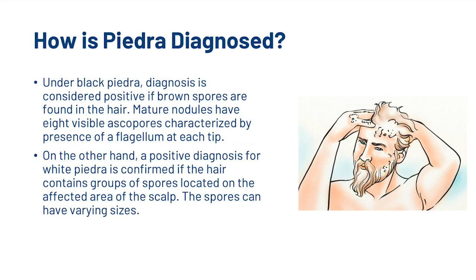For black piedra, a positive diagnosis is confirmed if brown spores are found in the hair. Mature nodules have eight visible ascospores characterised by the presence of a flagellum at each tip. For white piedra, a positive diagnosis is confirmed if the hair contains groups of spores located on the affected areas of the scalp. The spores can have varying sizes.